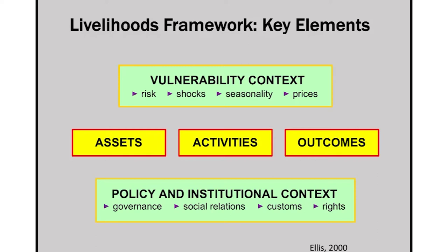Translating Ellis's definition into a very simple framework, in the centre you have assets, activities and outcomes as a chain. Depending on the resources you have, you can do certain things and that leads to certain outcomes. But these are not in isolation — they are located within a context of vulnerability: climatic risks, natural degradation, floods, droughts, seasonality, price volatility, shifts in prices, and other kinds of shocks that people may confront.